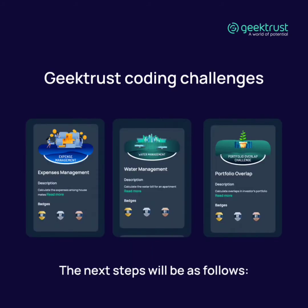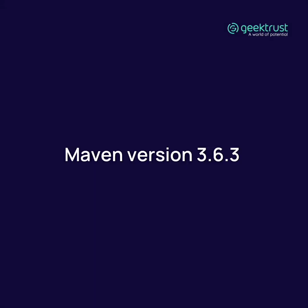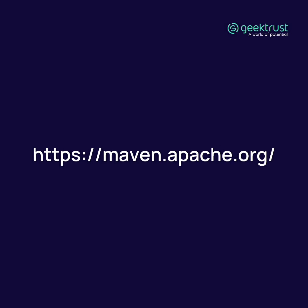As an initial step, you need to pick any GeekTrust coding challenge that you want to build a solution for. Please note that you need to have Maven version 3.6.3 installed in your system for the following commands to work. You can install Maven at the official Maven Apache website.